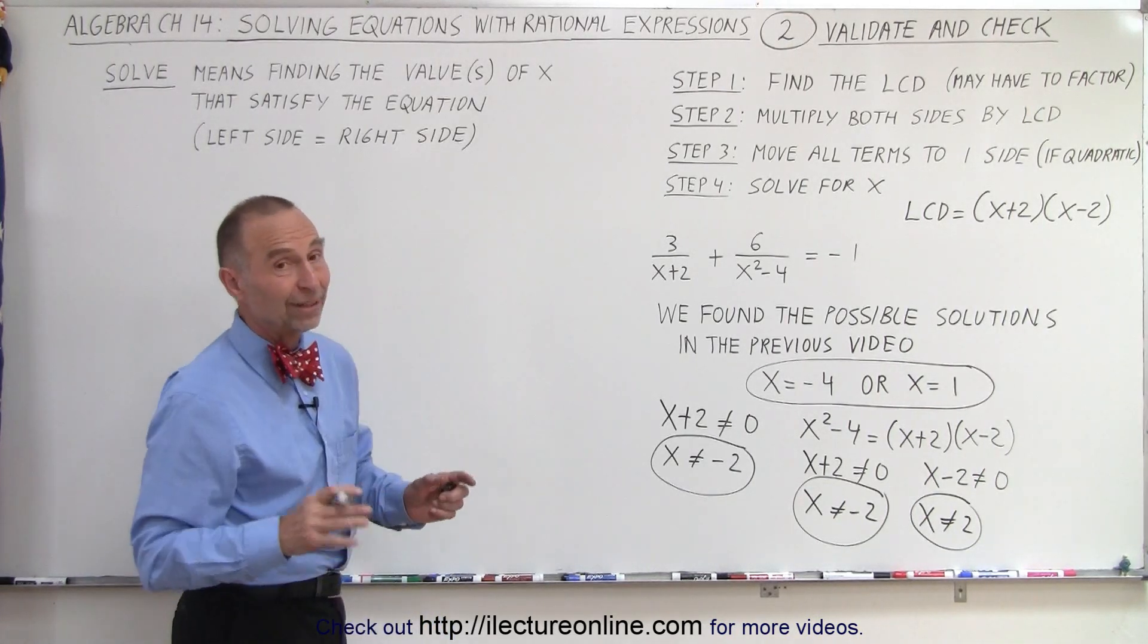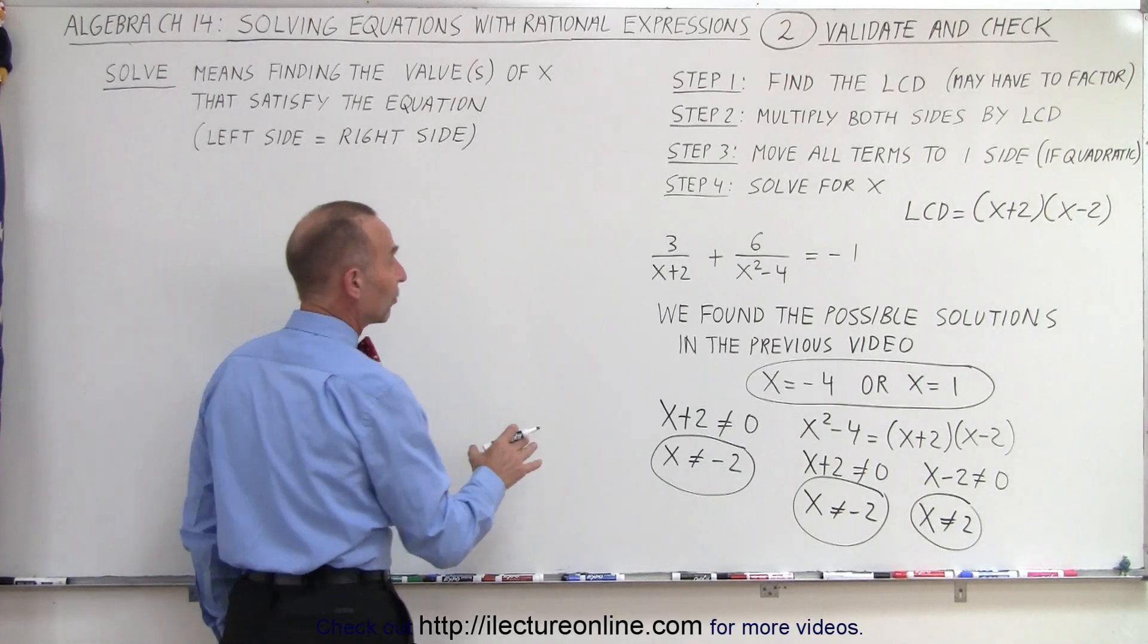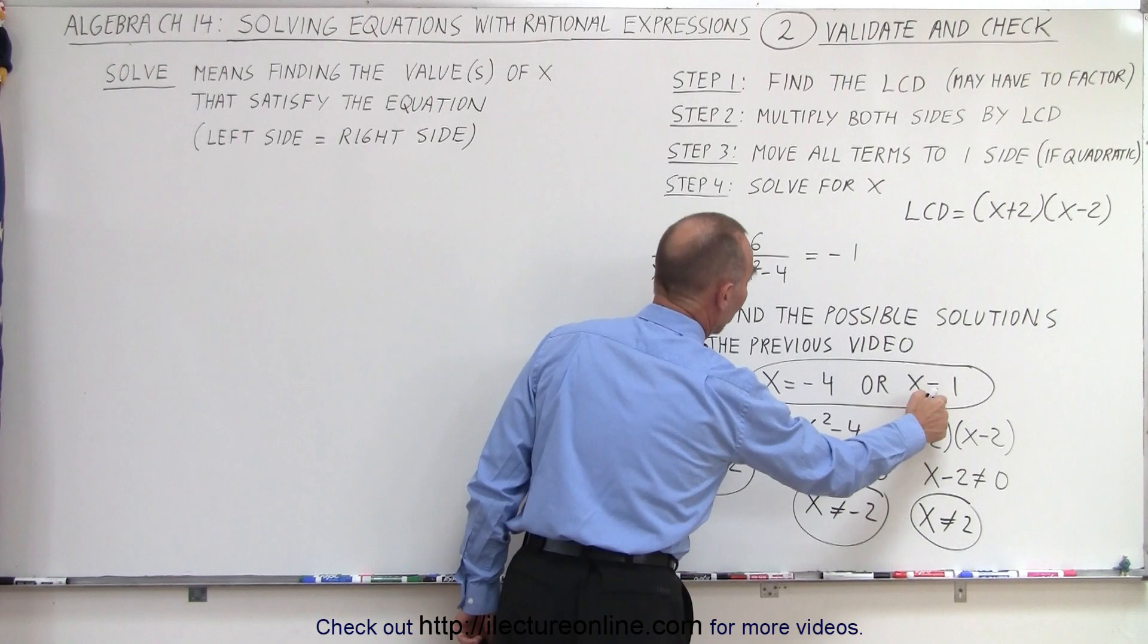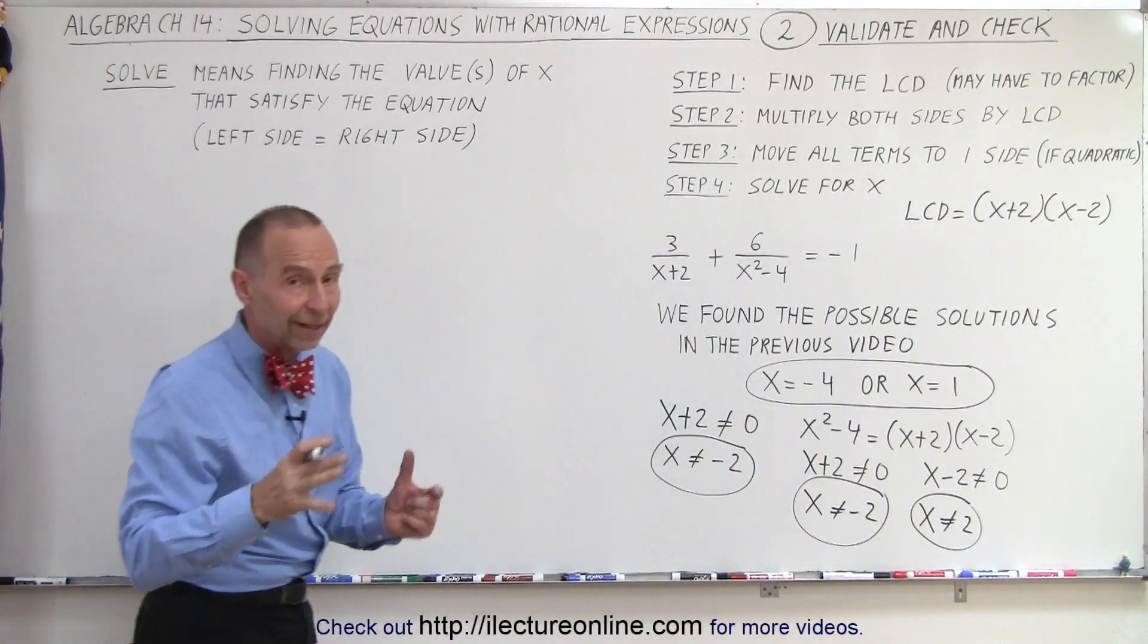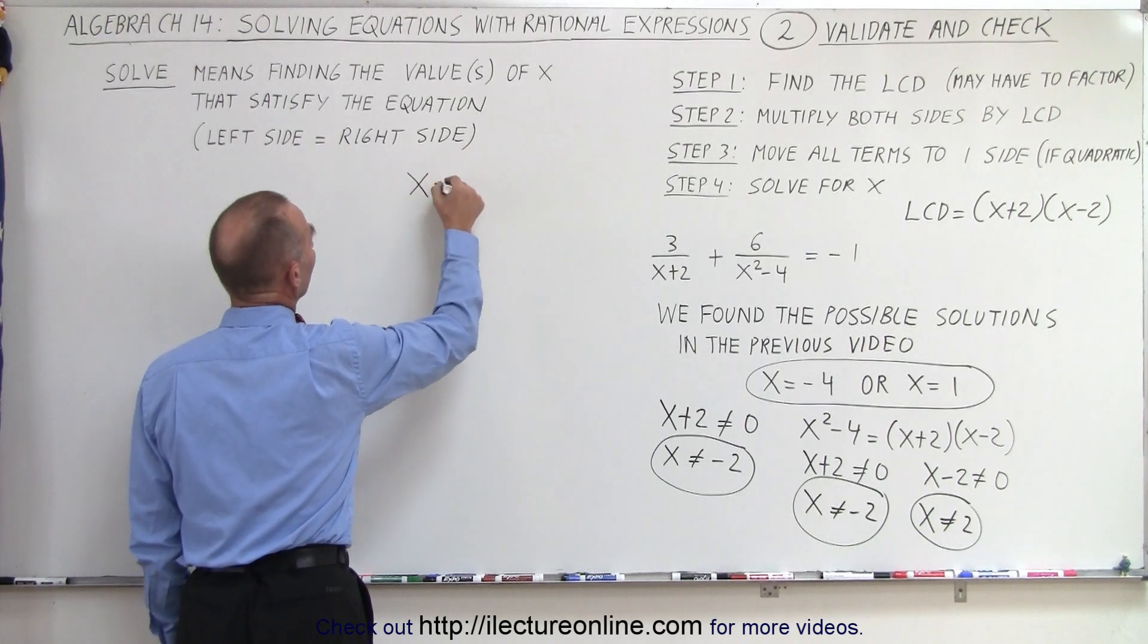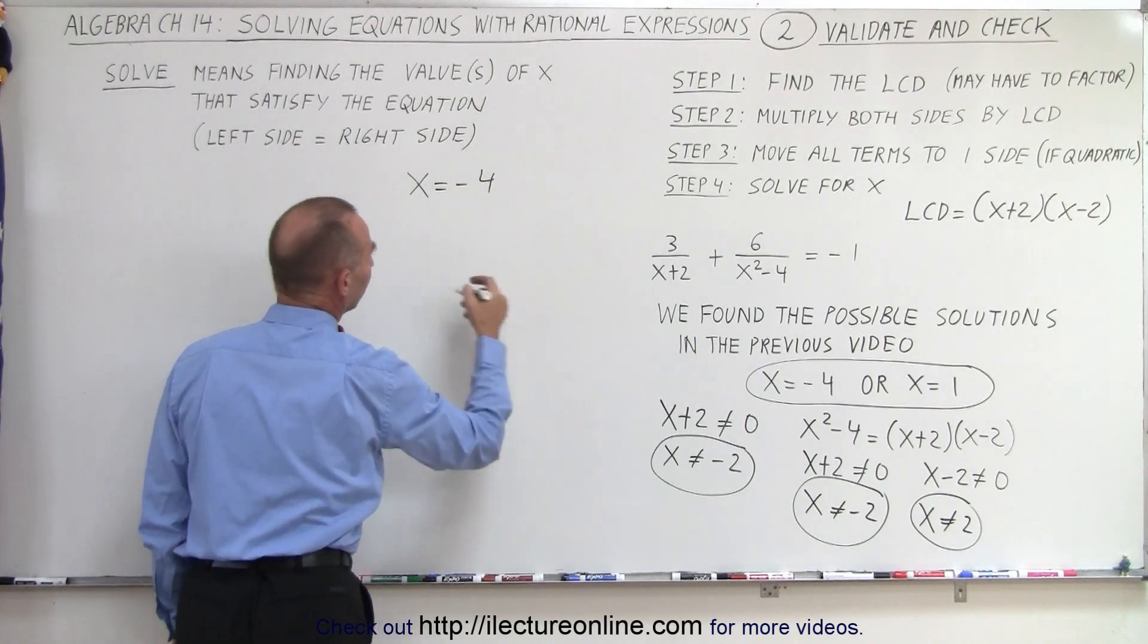But next, just to make sure, let's see if we indeed got the right solution. We're going to plug negative 4 in for x, and then plug in 1 for x and make sure the left side equals the right side. Let's start with x equal to negative 4.